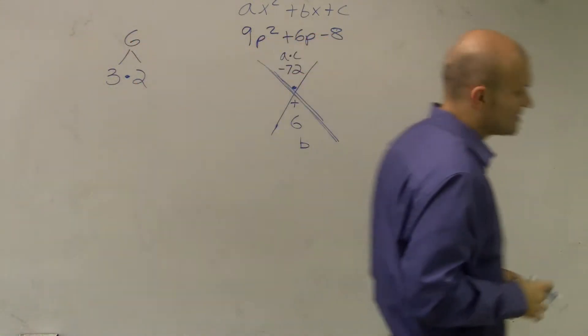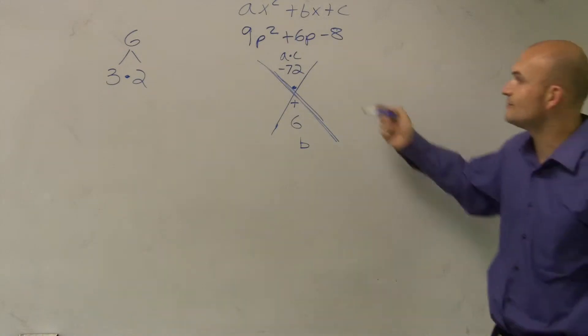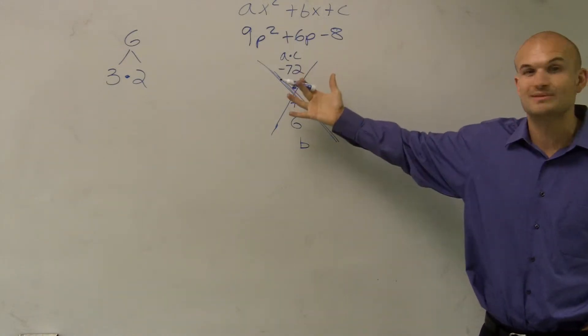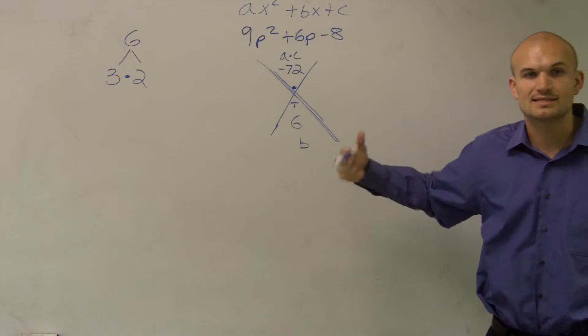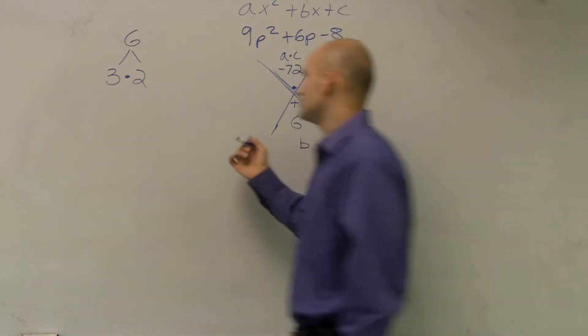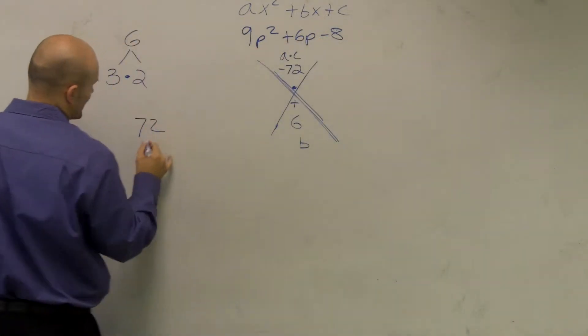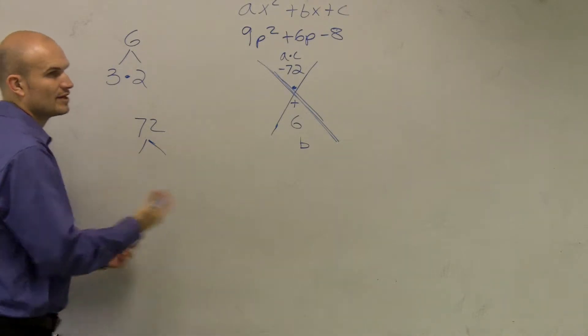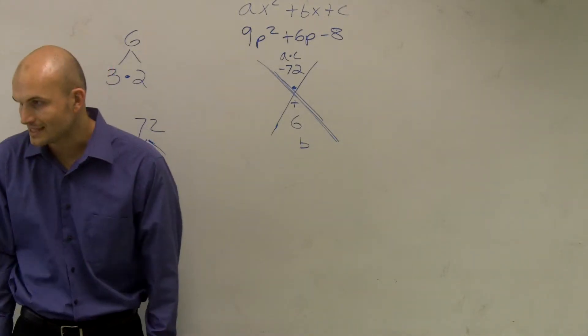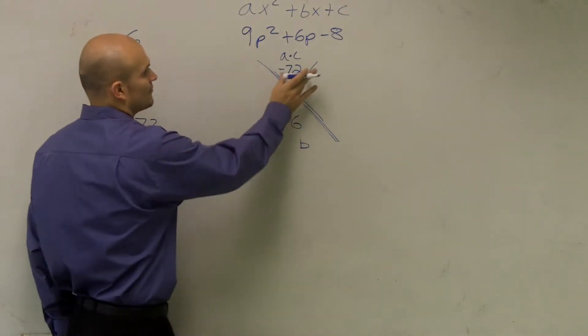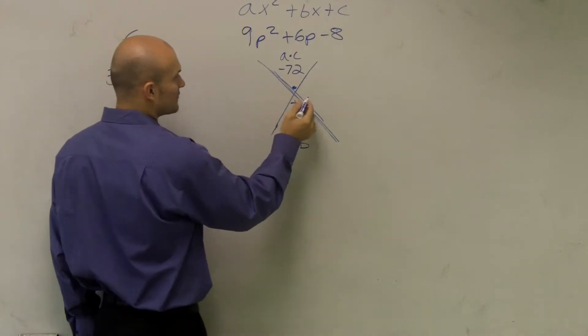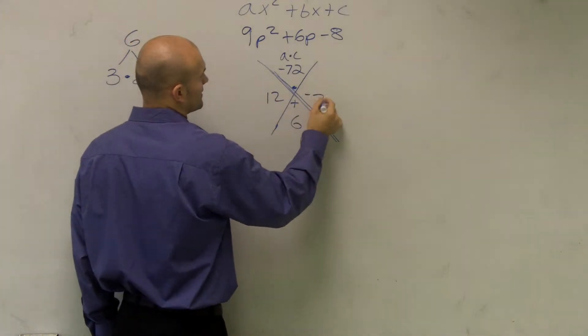So now when I wrote that plus and that minus for us, now what I need to do is I need to figure out what two numbers multiply to give me negative 72 but add to give me a positive 6. So what you can do is you can look at 72 and do your little factors, figure out all that they are. I don't have all day, so I'm just going to help you out right now. For here, they're going to have, for these two, it's going to be positive 12 and a negative 6.